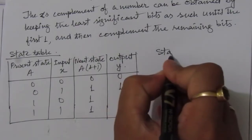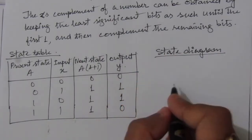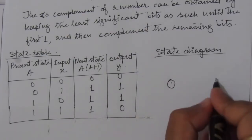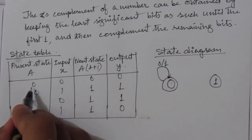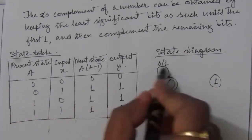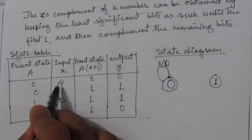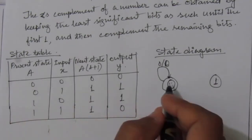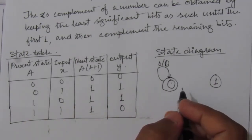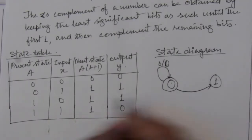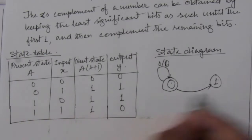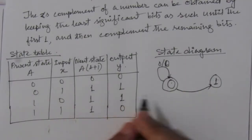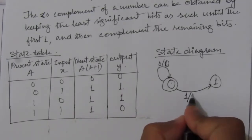Now let us make the state diagram. We will have two states: state 0 and state 1. When present state is 0 and input is 0, it remains in state 0 — the transition is from 0 to 0 with input 0 and output 0. When present state is 0 and input is 1, it goes to next state 1 with input 1 and output 1.